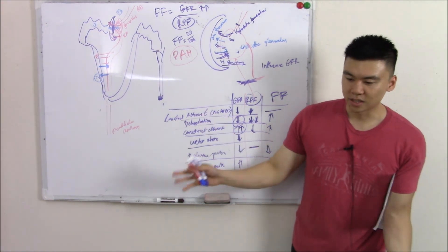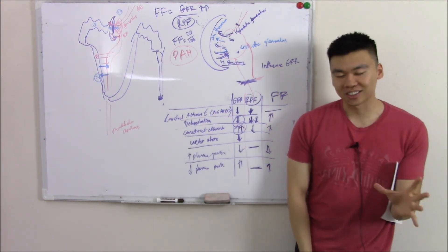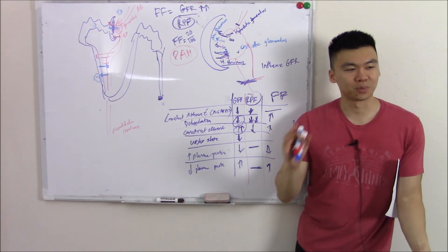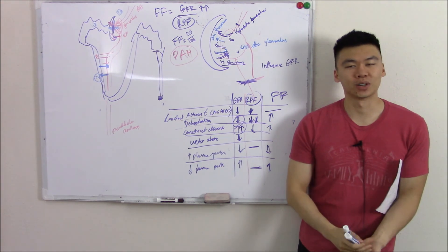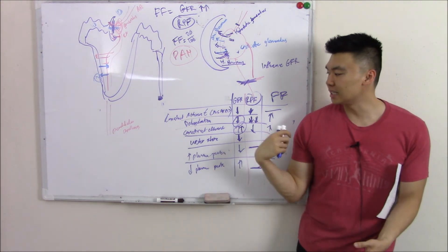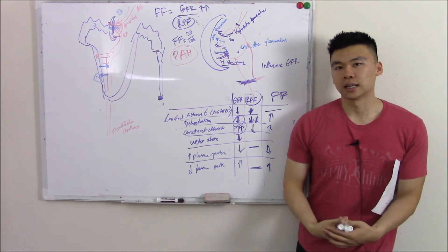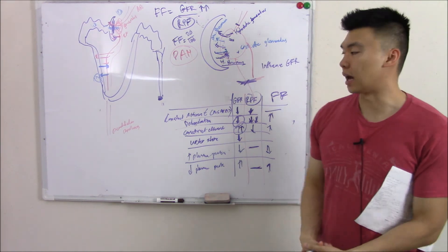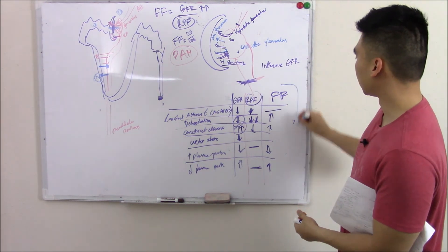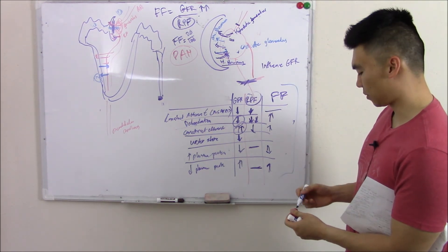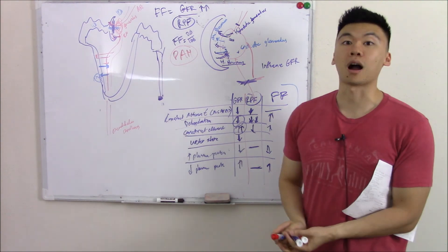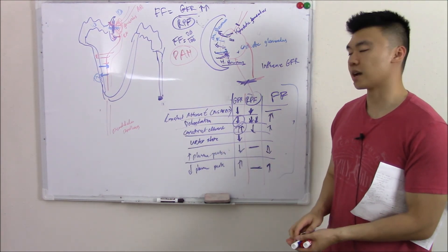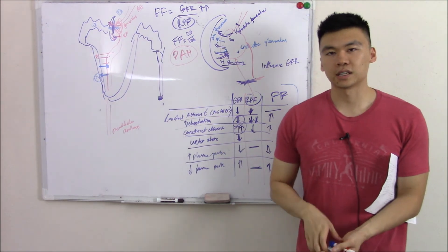So that is renal physio — all the charts, all the equations, all the graph stuff will be in my notes if you want to recap. They like to trick you, but if you understand the physio it's not too bad. I think the biggest part — the GFR/creatinine relationship — is commonly tested. I'd be shocked if you don't get a question concerning this.